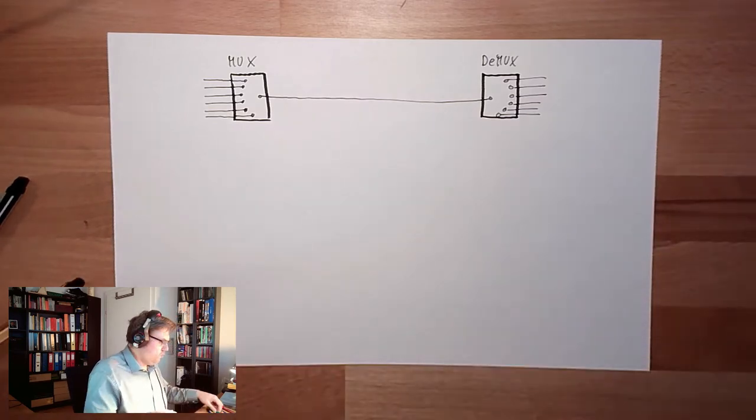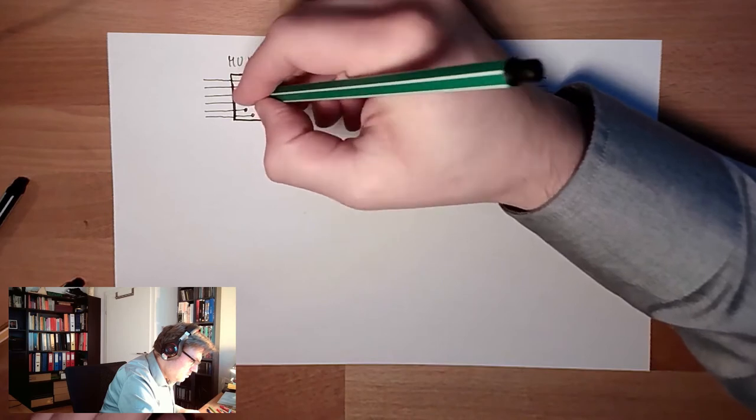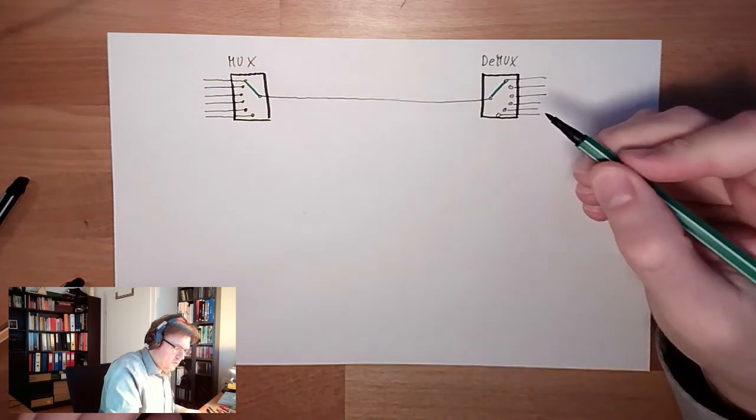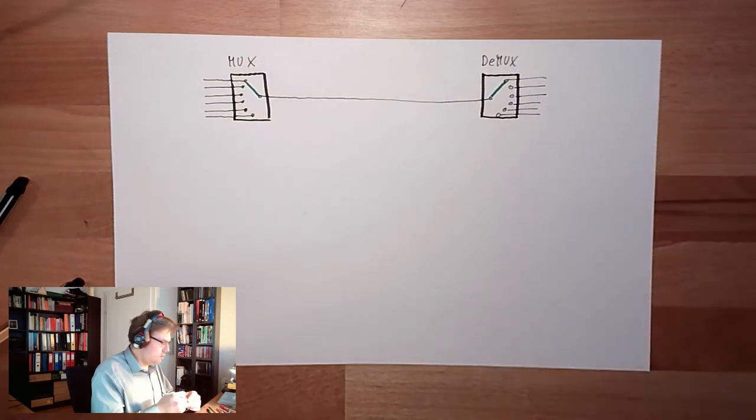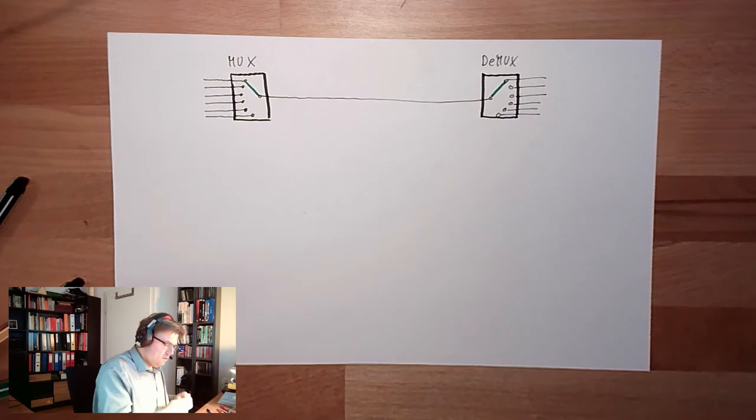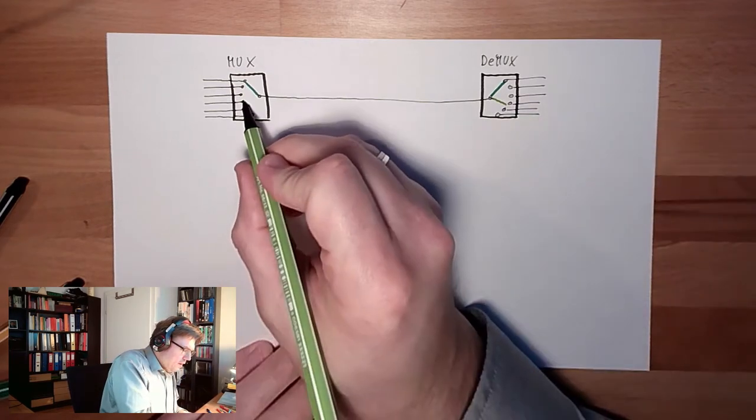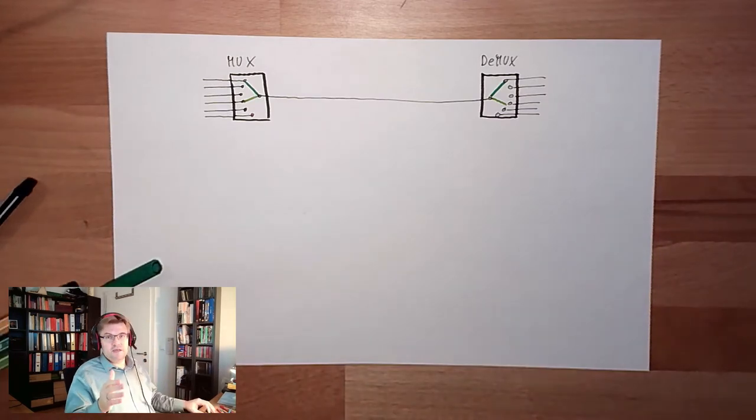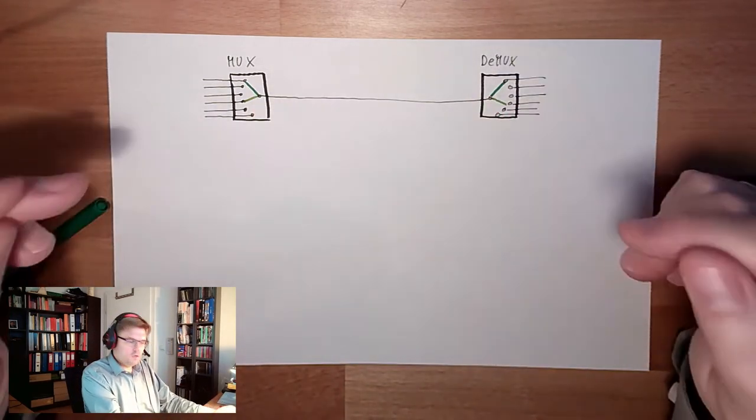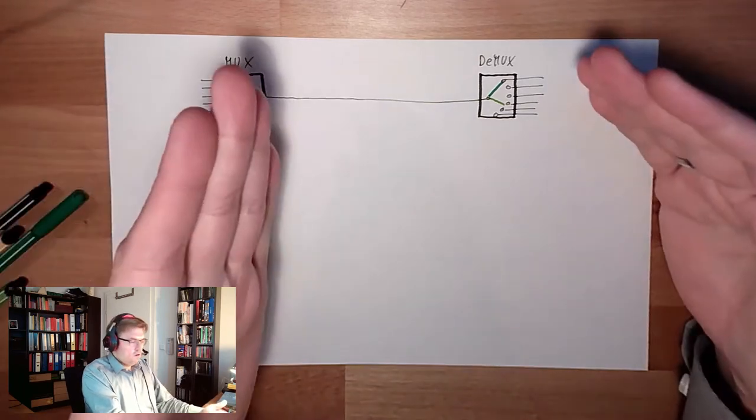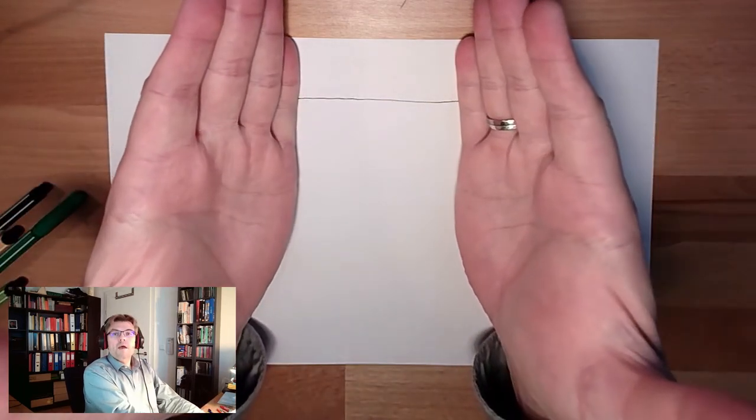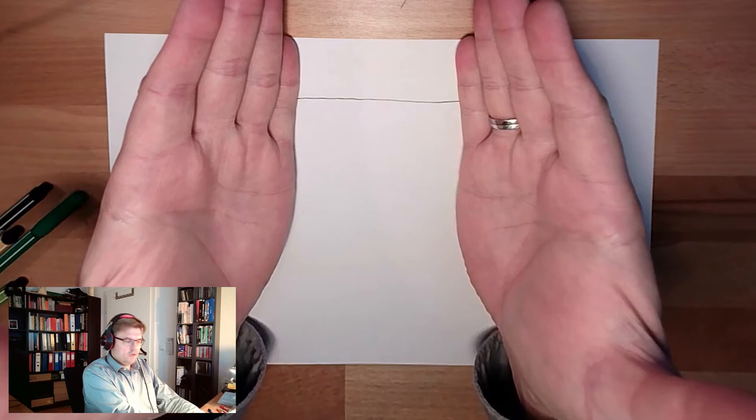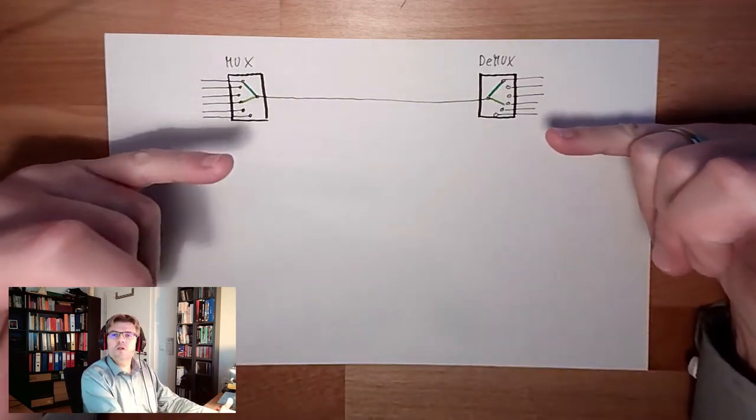And what I can do, I can select the position of a switch. You can select it to the first, to the second, or wherever. Wherever I like. And if both those positions are exactly at the same position, I only have one wire in between. So this is done at serial communication.